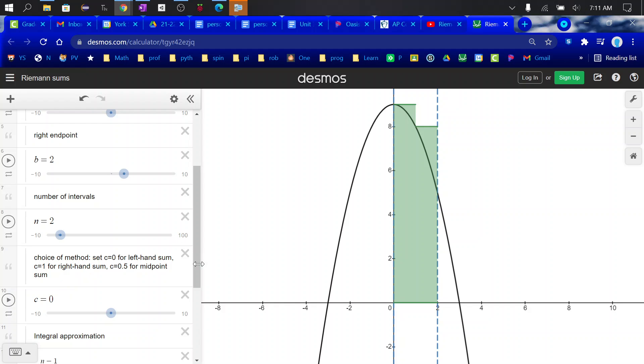If you would like to see a right angle or right approximation method, change your C to a 1 and there is the right and that is going to be an underestimate.